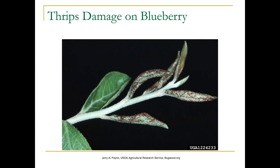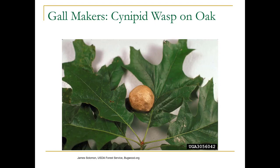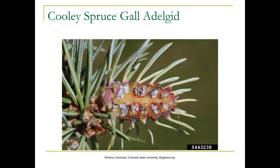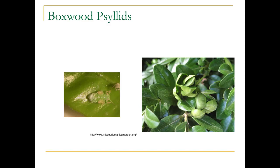Here's some distorted growth from aphids. Here's what a gall looks like on oaks. Here's a slice of a Cooley spruce gall adelgid — you can actually see the insect inside. As it ages it turns brown and almost looks like a cone. Poplar petiole gall aphid happens a lot on black cottonwood — you'll see this at the base of the petiole, and if you slice it open you'll see white fuzzy aphids. This is boxwood psyllid damage — it really doesn't hurt the plant.